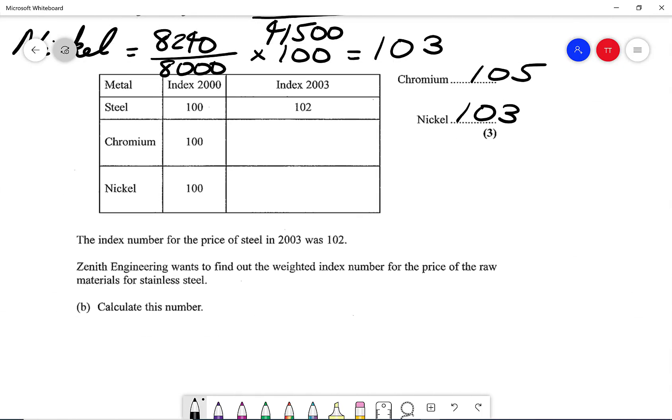Then it says that the index number for steel in 2003 was 102. Zenith Engineering wants to find out the weighted index number for the price of the raw materials for stainless steel. Calculate this number. So we know that the index number is 102 in 2003. We know what chromium is, that's 105. We know what nickel is, it's 103.